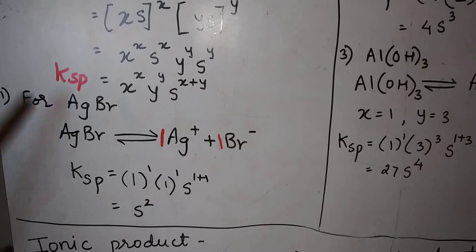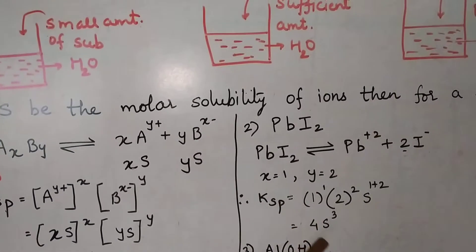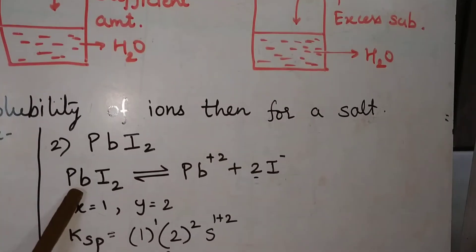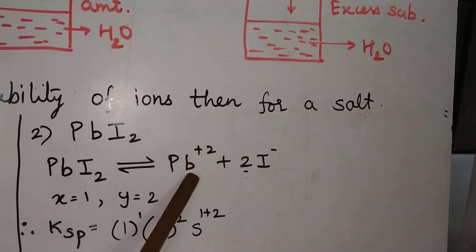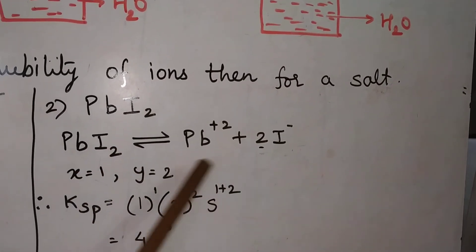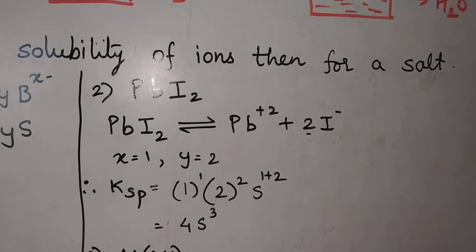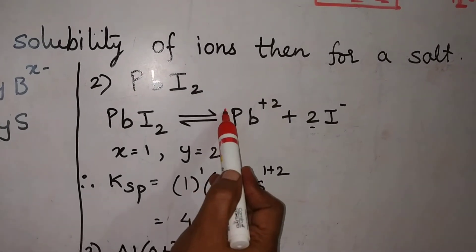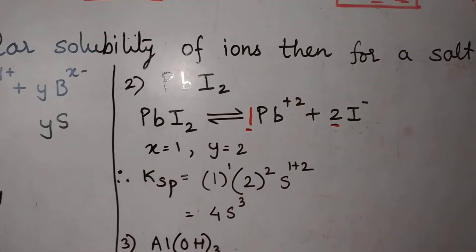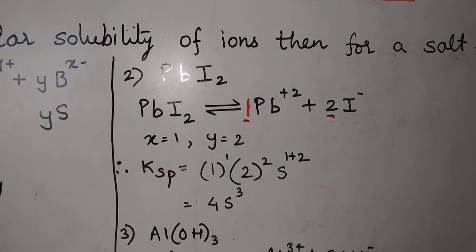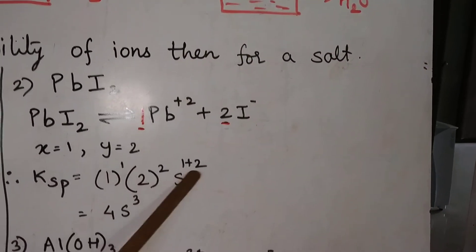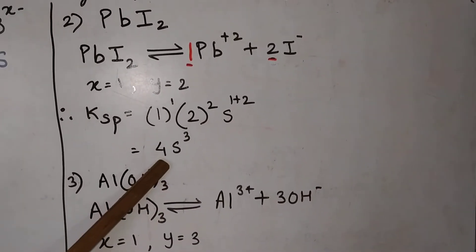For the second example, the salt is PbI2. Write the equilibrium equation: PbI2 ⇌ Pb2+ + 2I−. So X = 1 for Pb2+ and Y = 2 for I−. Finding KSP: KSP = 1^1 · 2^2 · S^(1+2) = 1 · 4 · S³ = 4S³.